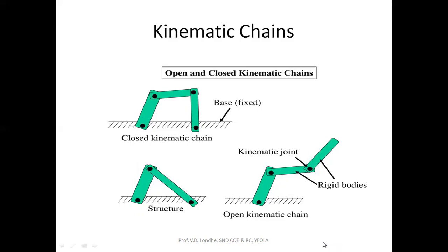In an open kinematic chain, one end of the chain and the other end are not connected to each other — they are free. In a closed kinematic chain, one end is attached to a substrate and the other end of the pair is also connected to the same substrate. Additionally, a kinematic chain may be a similar kinematic chain, where we have same-nature links, or a compound kinematic chain, which has a combination of ternary, binary, or other links depending upon the configuration.